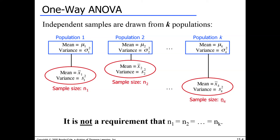The idea behind the ANOVA test is: we have populations we want to compare — in the agriculture example, populations are simply fields treated with different types of fertilizers. Each treatment supposedly gives a certain mean yield from a standardized 10x10 plot of land. With k different fertilizers, you have k different results. We want to find out if some fertilizers are better than others.